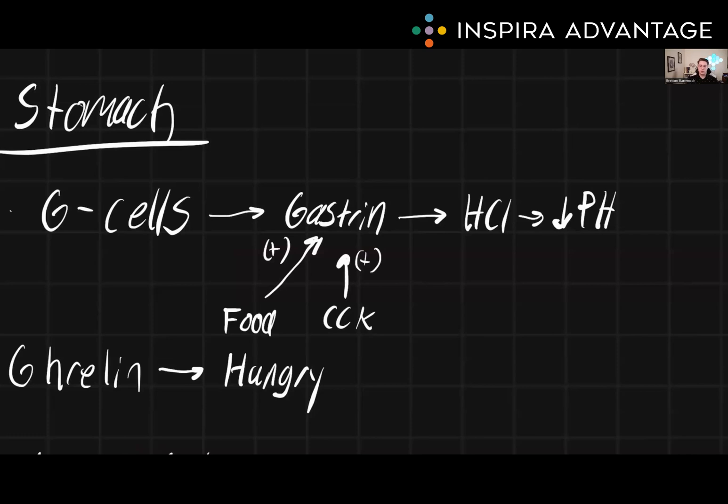Gastrin levels also increase in response to certain hormones, such as secretin or cholecystokinin (CCK), which are released in response to the presence of food in the small intestine. We'll get to this in a moment.